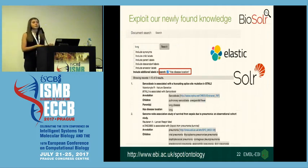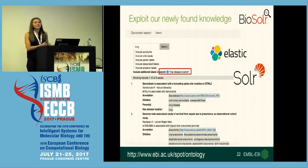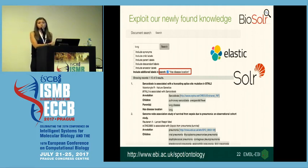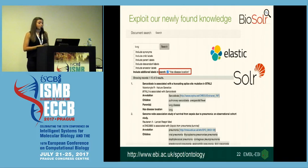So that's fine for OpenTargets, but how can you use this knowledge — these annotations? We have another tool called Biosolr, which works for Elasticsearch and Solr. What it does is index your data as it normally would, but it also takes the ontology term, goes to the Ontology Lookup Service, and pulls in all that information. Then you can build applications around it, like this example web app, and search, for example, by disease location.